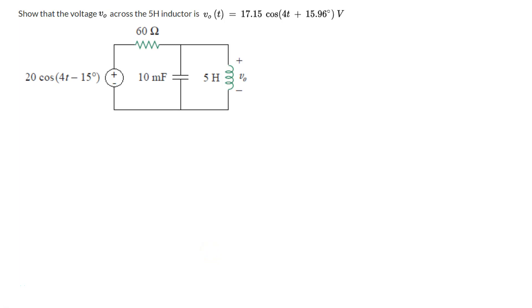Okay, so here's a circuit with a resistor, capacitor, and an inductor, supplied by a sinusoidal source, 20 cosine 4t minus 15 degrees, so that's volts.